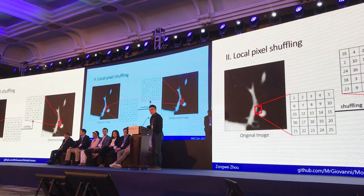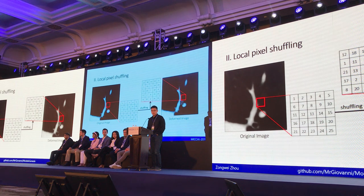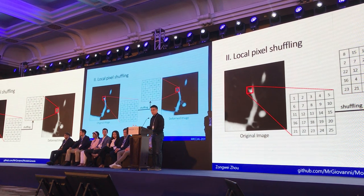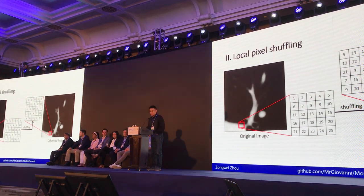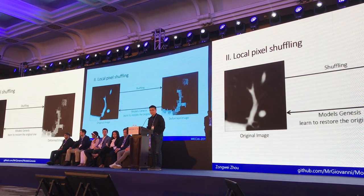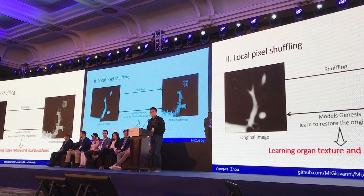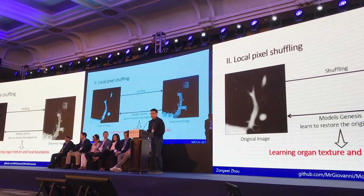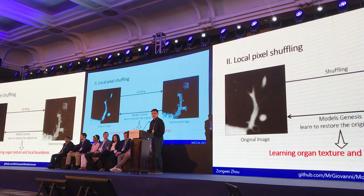Second, local pixel shuffling. We randomly shuffle the pixel positions within a small region of the image, and let the model learn to recover the original image. By doing so, the model must learn from the organ texture and the local boundaries.